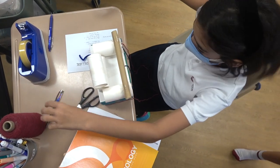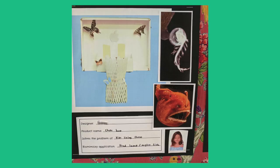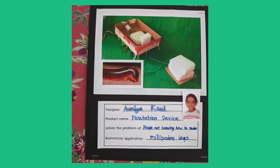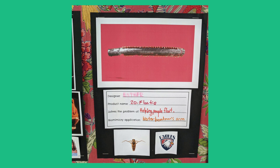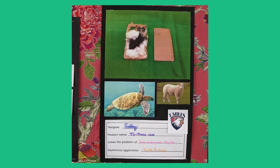Here are some of the items students created: a device that mimics a pelican's beak to scoop trash in rivers; a hoop with lights that mimics the headlamp of an anglerfish to attract and encourage the family to put laundry into the laundry basket; a flotation device with small motorized paddles mimicking the legs of a millipede to move a person around the pool; a swimming device mimicking the hairs of the water boatman insect to help float on water's surface; a device mimicking a bat's echolocation to alert people if they are not safely distancing; and a phone case with parts mimicking the hard shell of a turtle and the wool of a sheep to protect the phone when it falls.